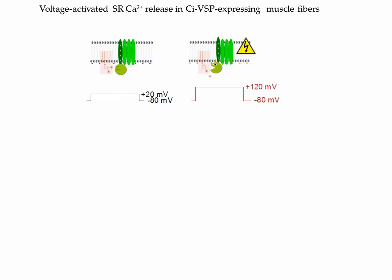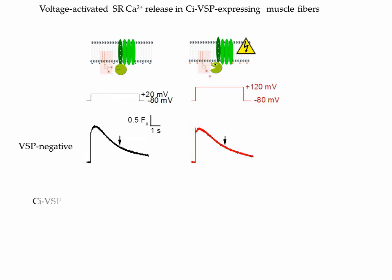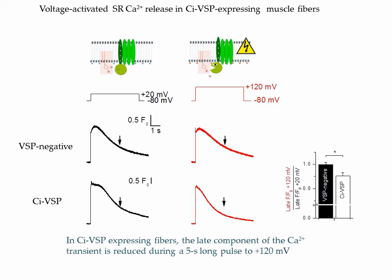Here is our first try. The muscle fiber is depolarized for 5 seconds from minus 80 to plus 20 mV, and then for 5 seconds from minus 80 to plus 120 mV to activate the VSP. These are Rhod2 fluorescence transients recorded in VSP-negative fibers in response to these two pulses — they look the same, with a fast initial rise followed by a more or less complex phase with a slow decay during the pulse. In the CI-VSP-expressing fiber, the initial peak doesn't seem to be much affected by the pulse to plus 120 mV, but the slow decay appears to be faster during this pulse compared to the pulse to plus 20 mV. This effect was quantitatively small on average but significant, and we took this as a first indication that activating the VSP may have a depressing effect on calcium release.